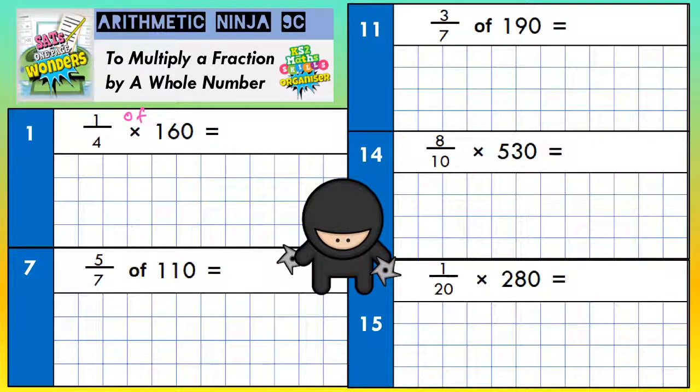So a quarter is divided by 4. So we need to do 160 divided by 4. We can do a quick bus shelter to help us with this. 4s into 1 won't go because 4 is bigger than 1. But because it wouldn't go in there, we haven't really used the 1, so we need to carry the 1 to make 16. 4s into 16 goes exactly 4 times.